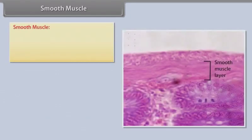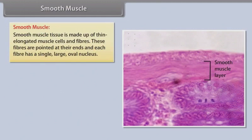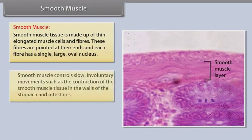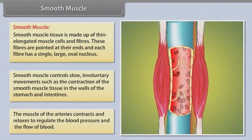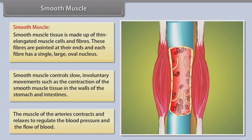Smooth muscle tissue is made up of thin, elongated muscle cells and fibers. These fibers are pointed at their ends, and each fiber has a single large oval nucleus. Smooth muscle controls slow, involuntary movements such as the contraction of smooth muscle tissue in the walls of the stomach and intestines. The muscles of the arteries contract and relax to regulate blood pressure and the flow of blood.